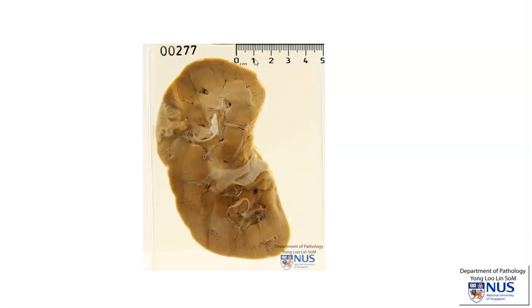Hello. This is a specimen of a kidney that has been longitudinally bisected, and we're looking at the cut surface. We can see the cortex, the medulla, and this is the renal pelvis.